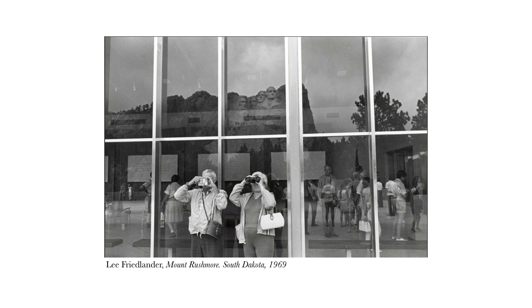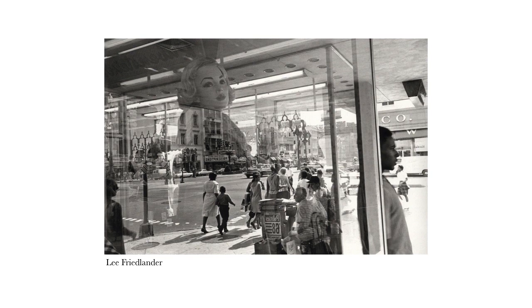Another photographer from this period is Lee Friedlander, known for photographing fragmented reflections and storefronts — the urban social landscape. His images often contained his own shadow and reflection, so the photographer is present in the photograph and very much acknowledging that in the images. The viewpoint is there; he's part of the work and his perspective is present.